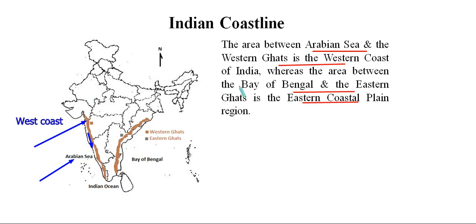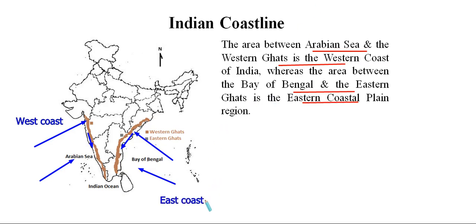Along the eastern half of our Indian subcontinent we have the Bay of Bengal and the Eastern Ghats. The white shaded region between the Eastern Ghats and the Bay of Bengal is simply known as the Eastern Coastal Plain.